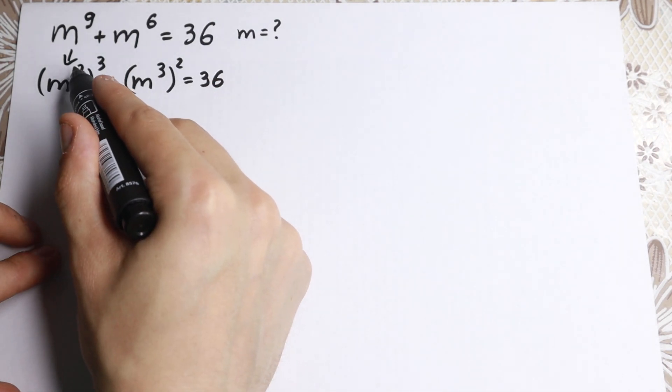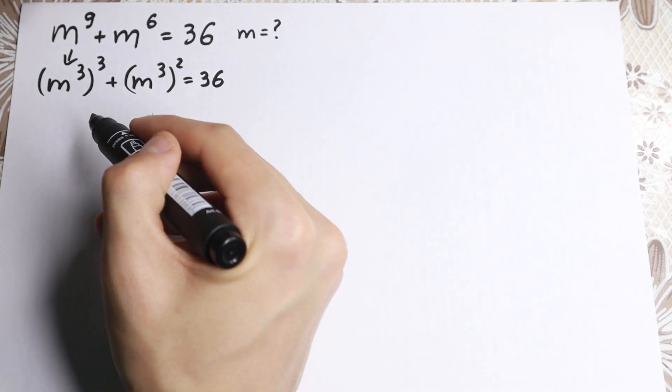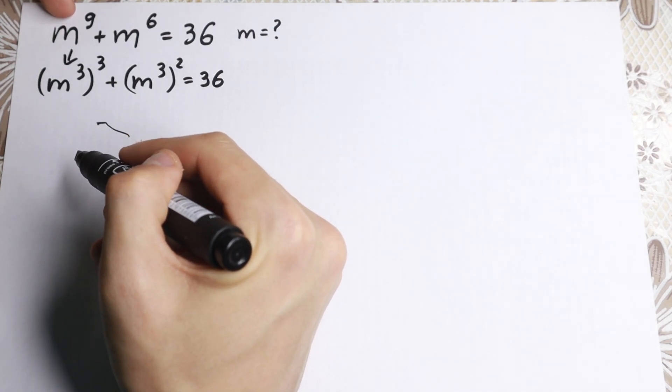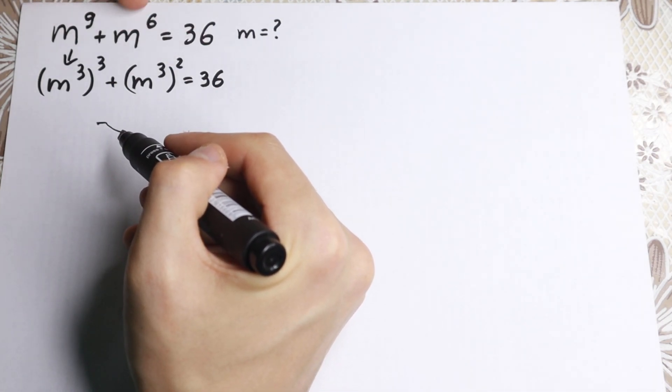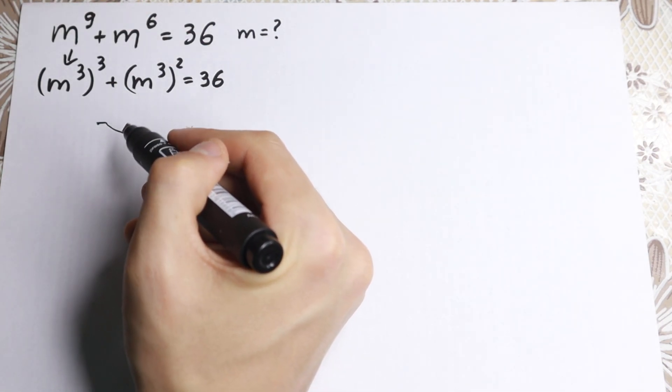We have this situation: 3 times 3 gives the 9th — same as in the beginning — and 3 times 2 gives the 6th — same as in the beginning.